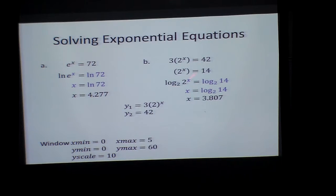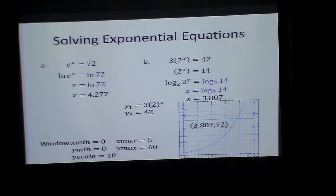Let's try it for problem b. Put in y1 and y2 equals 42. Notice I changed the window to 0 to 5, 0 to 60, with a y scale of 10, just so I could see it. I know the answer had to be above 42. And there we go.